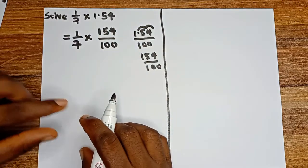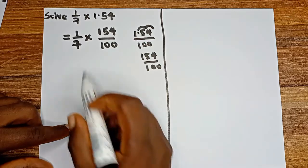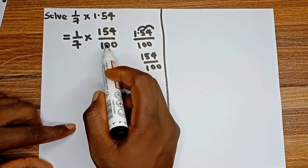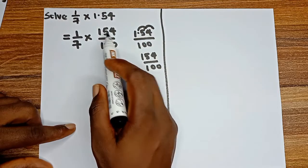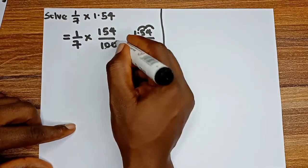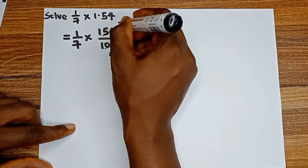Now we have 2 fractions in this equation. Next, we are going to break down. Is there any value that can go into 100 and 154? If 2 goes here, we have 50. If 2 goes here, we have 77. So this means we have 1/7 multiplied by 77/50.